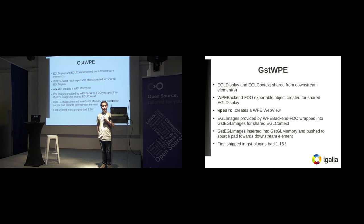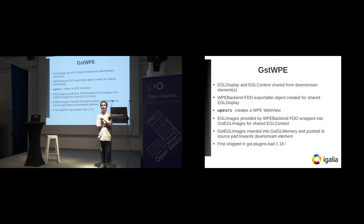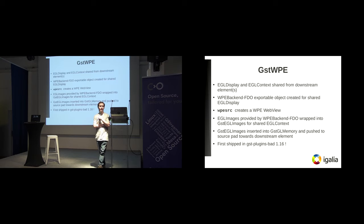It was released in GStreamer 1.16. How does it work? We get the EGL display and context from the video sink, and we create a WPE FDO backend in that element and associate it to the WebView. We make use of that WebView to load some kind of URL or some bytes. And then we get from the view backend EGL images that we wrap into GST GL memory, so we get basically zero-copy rendering.